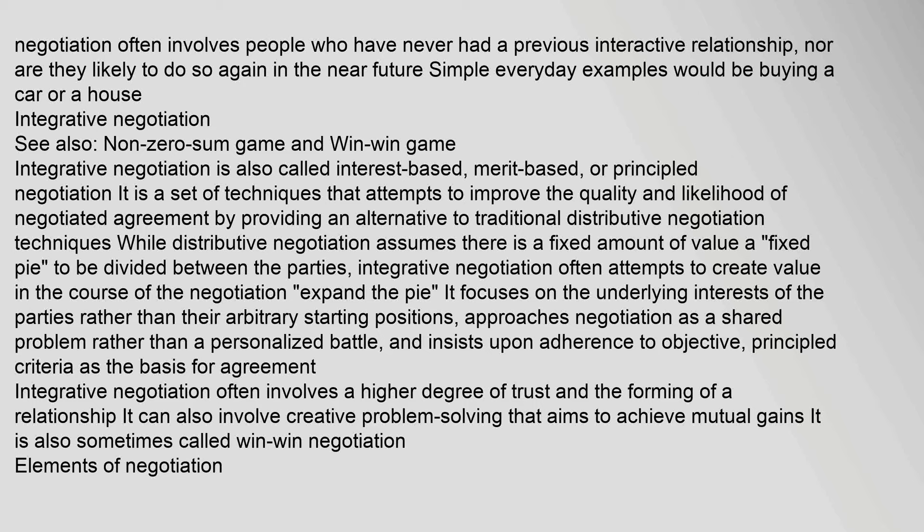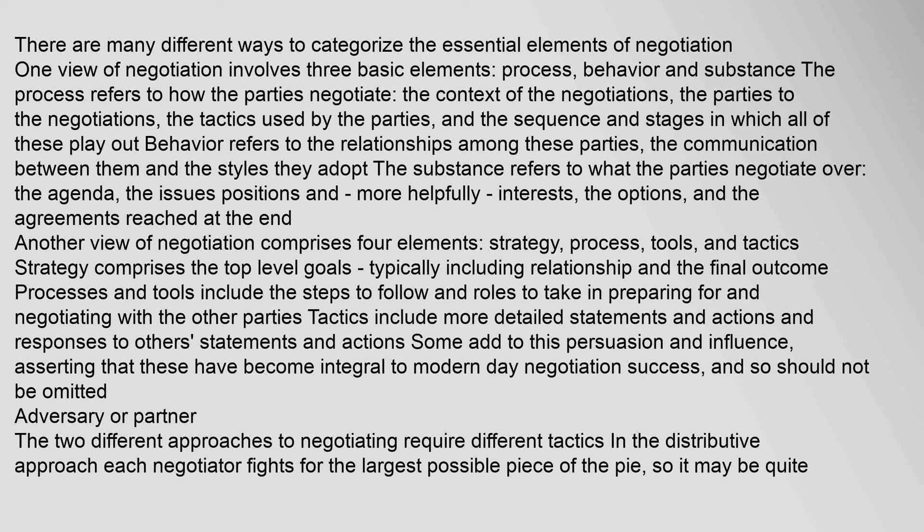There are many different ways to categorize the essential elements of negotiation. One view involves three basic elements: process, behavior, and substance. The process refers to how the parties negotiate — the context, the parties, the tactics used, and the sequence and stages in which all of these play out. Behavior refers to the relationships among these parties, the communication between them, and the styles they adopt. The substance refers to what the parties negotiate over — the agenda, the issues, positions, interests, the options, and the agreements reached.